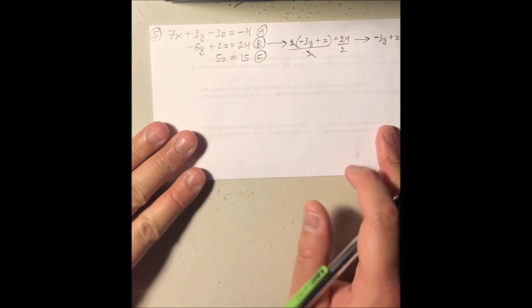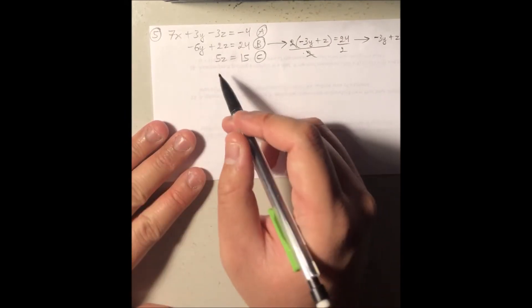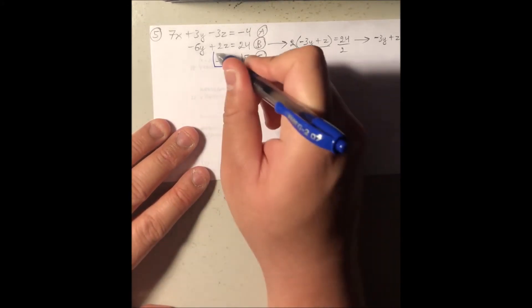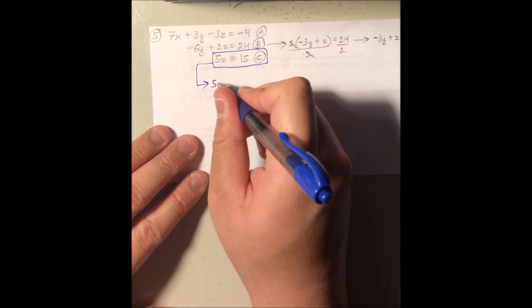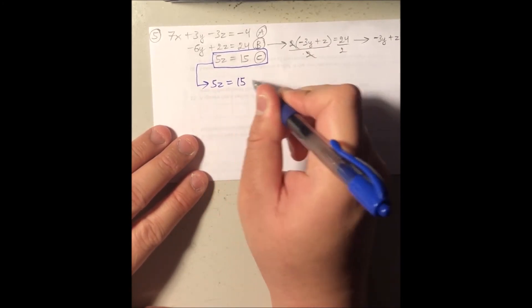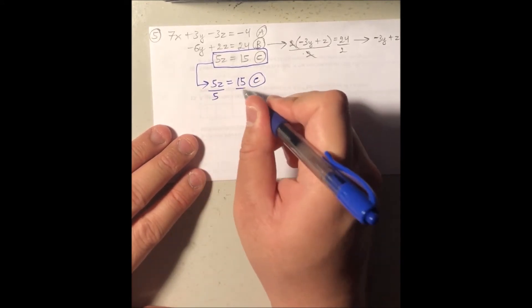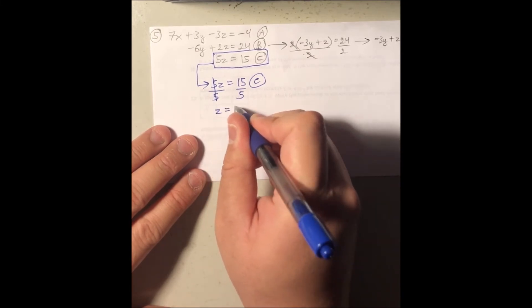Now I'm gonna go back here, and I'm gonna deal with the C equation. So I can do that if I take this equation here, right down here, so that's easier to see, and then I divide both sides by 5 to solve for z. That means I'm gonna get z equal to positive 3.